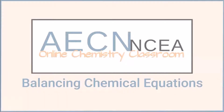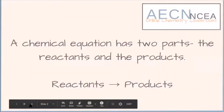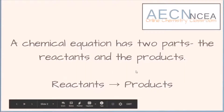Welcome back to another AECN chemistry lesson. This time we are going to be looking at balancing chemical equations. A chemical equation has two parts: the reactants and the products. We find the reactants on the left hand side of the arrow and the products on the right hand side. The reactants are what we are starting with and the products are what we end up with when the reaction has finished.